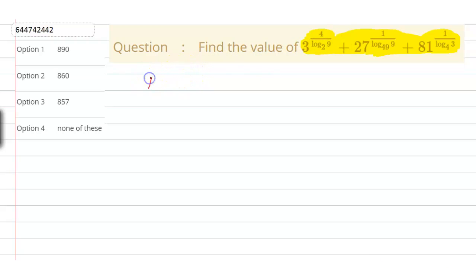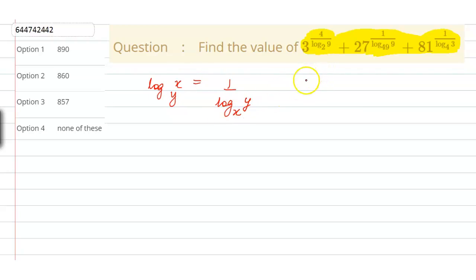The first property of log says that if we are given an expression of the format log of x to the base y, then this is equivalent to 1 upon log of y to the base x. Another property of log is that if we have an expression of the format x to the power a, into log of y to the base x, then that equals y to the power a.